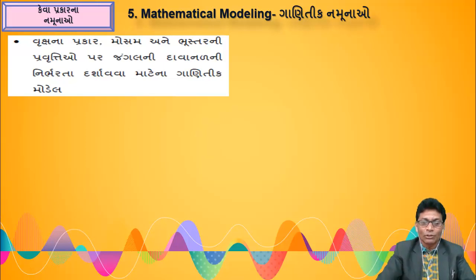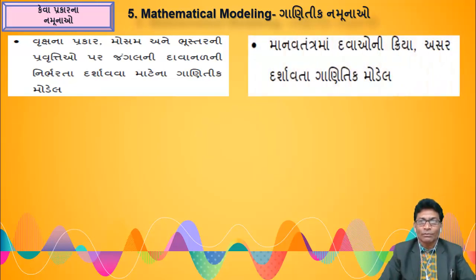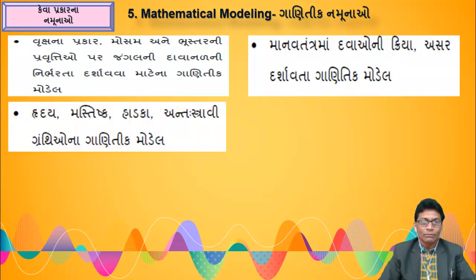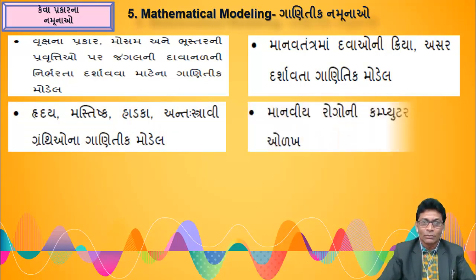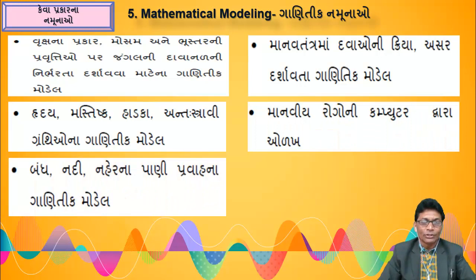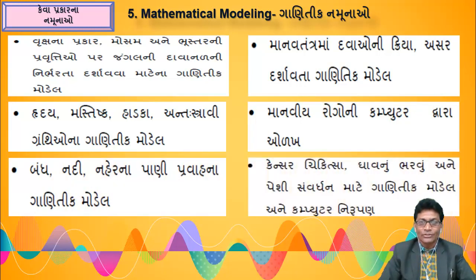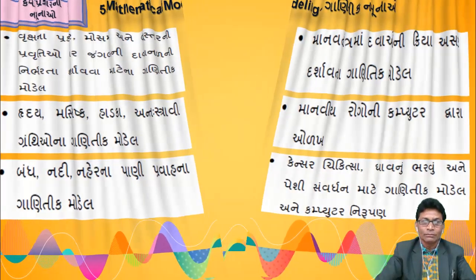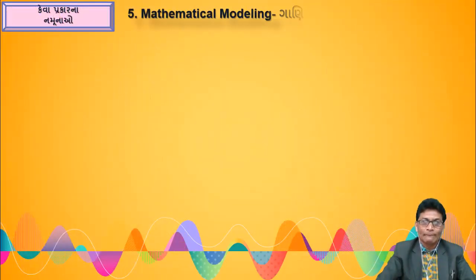Mathematical models for various body systems: heart, brain, kidneys, endocrine glands, and their functioning. Models showing psychological flow and computer-based processing. Models for rivers, streams, small water bodies, and water flow. Mathematical models for intracellular biological and chemical processes - alpha, beta, gamma, and related models.